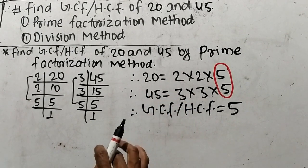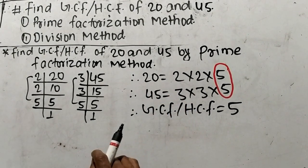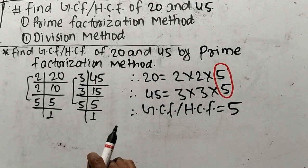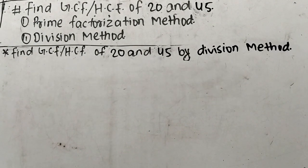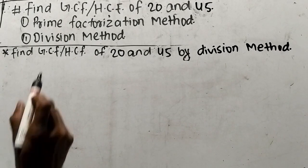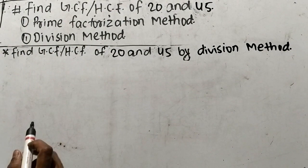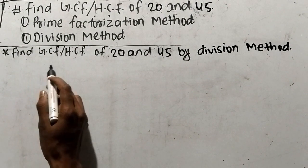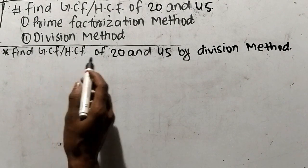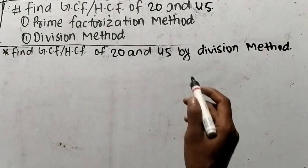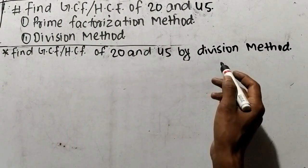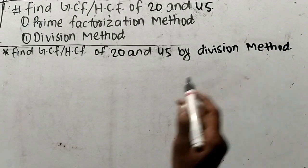Therefore, 5 becomes the GCF or HCF of 20 and 45. In this way we can find out GCF by prime factorization method. Now our second method is by division method. Let's find out GCF or HCF of 20 and 45 by division method.